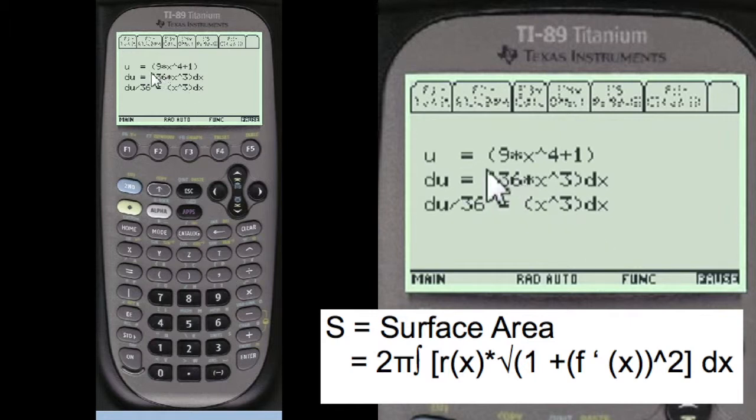This is u substitution. u equals this. du equals 36x. You always take 36 and put it on the other side as a denominator. du over 36 equals that.